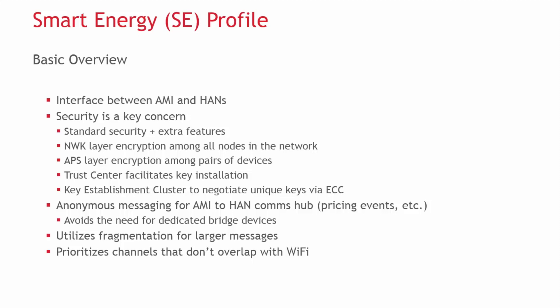Due to the sensitive data being transferred back and forth, you need to take the basic level of security from Home Automation and add extra features. While there is still the network-wide encryption, there is also encryption at the APS layer slightly higher up. At the APS layer, a pair of devices may have their own key that the rest of the devices in the network do not have, allowing for secure messaging between the paired devices. There is a trust center in the network that facilitates the creation and transfer of the APS layer key.